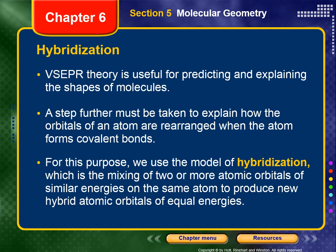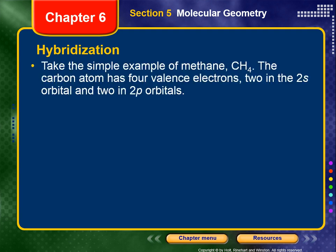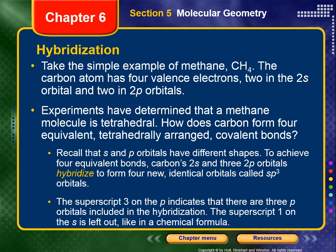Now we get to something called hybridization. VSEPR theory is useful for predicting and explaining the shapes of molecules, but a step further must be taken to explain how orbitals of an atom are rearranged when the atom forms covalent bonds. For this purpose, we use the model of hybridization — the mixing of two or more atomic orbitals of similar energies on the same principal quantum level on the same atom to produce new hybrid atomic orbitals of equal energy.